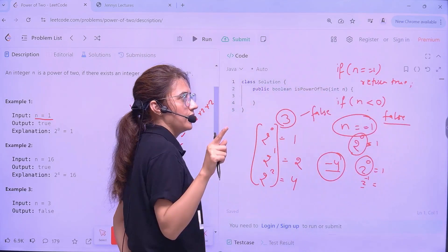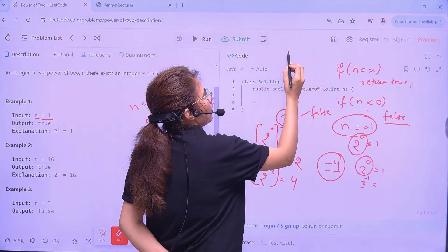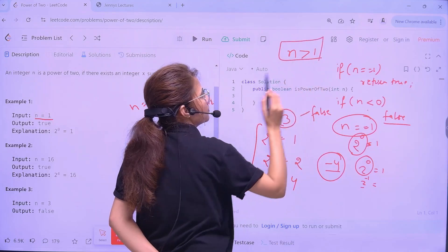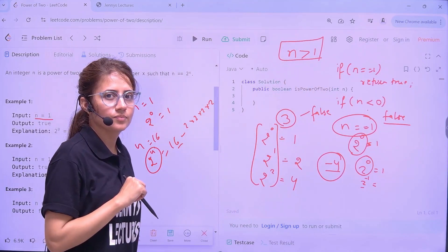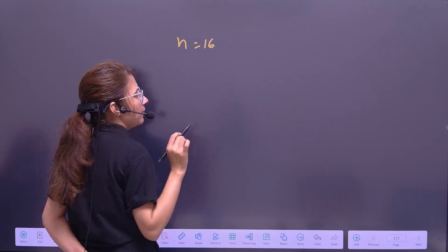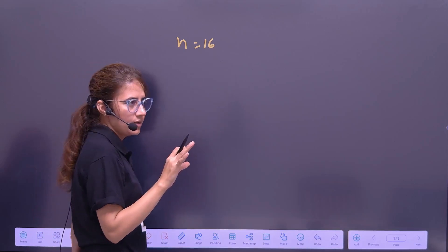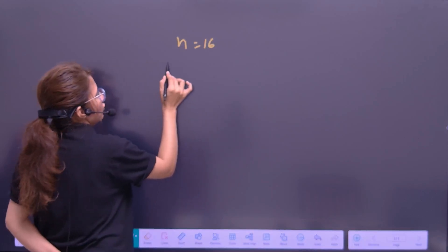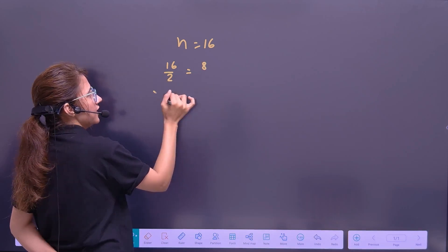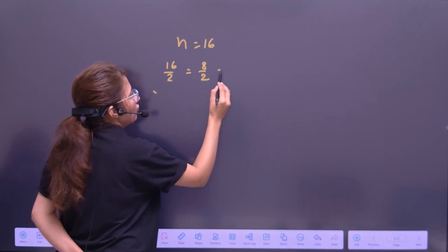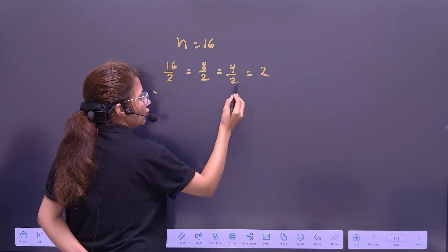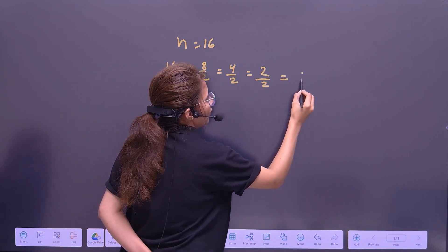Now you have to check for the condition if number is greater than 1. One approach is the brute force approach — the simplest one. Suppose number is 16: divide 16 by 2, you get 8 with remainder 0. Again divide by 2, you get 4, remainder 0. Again, you get 2, remainder 0. Again, divide by 2 and ultimately you will get 1.